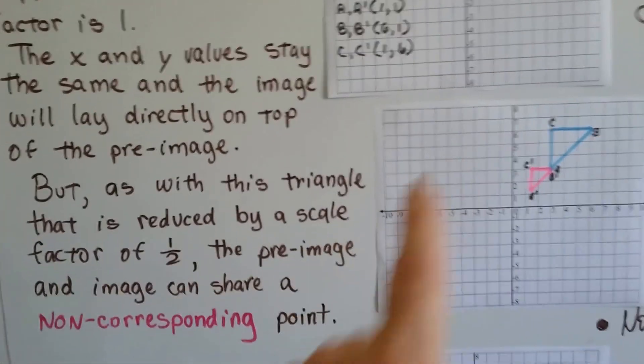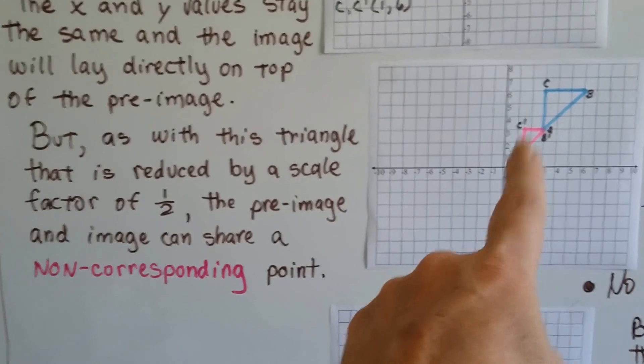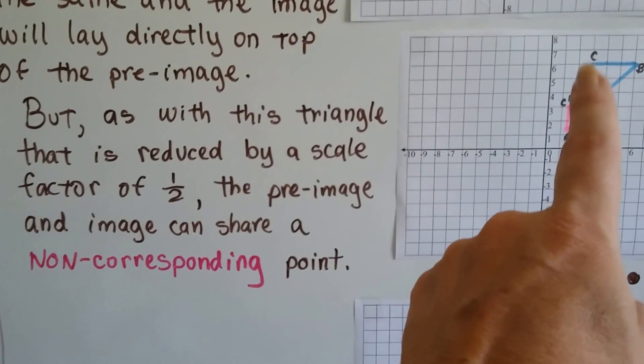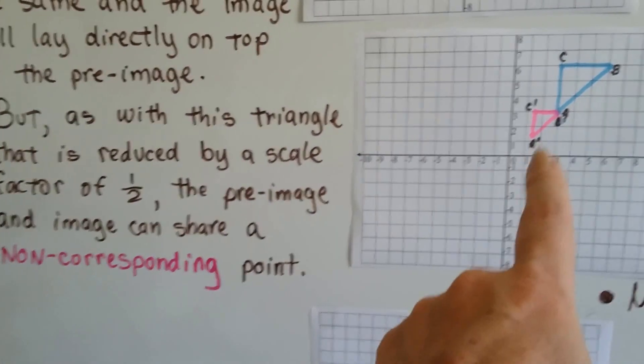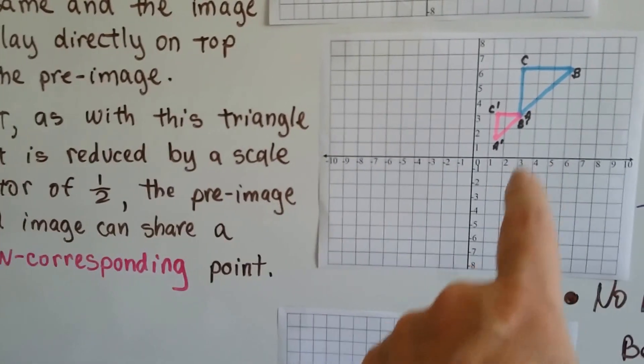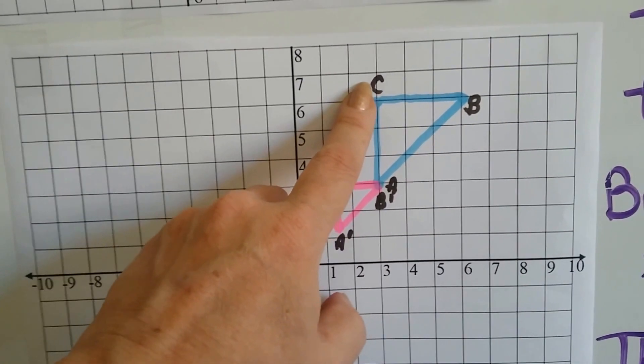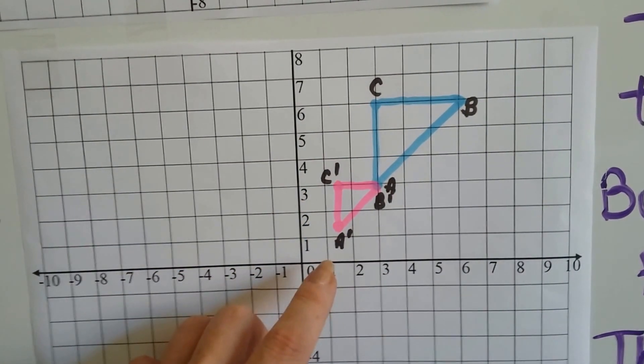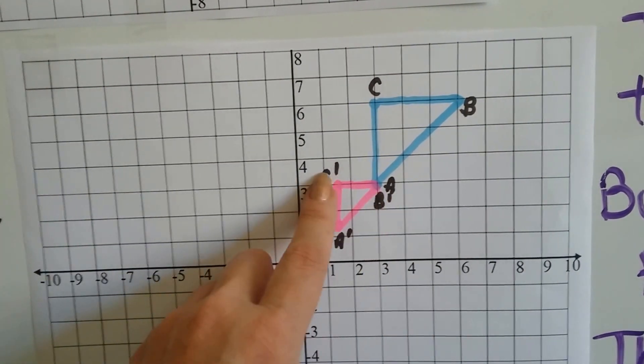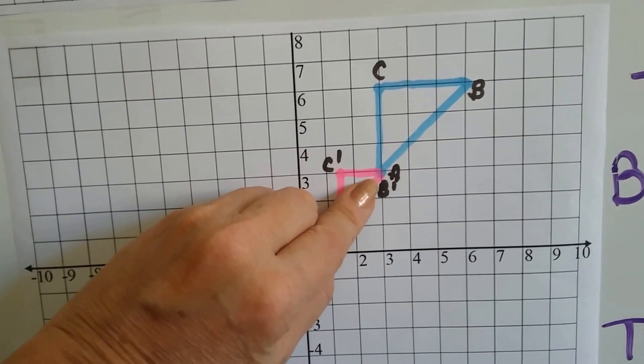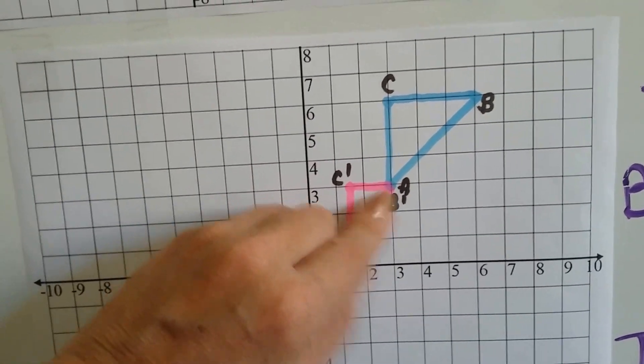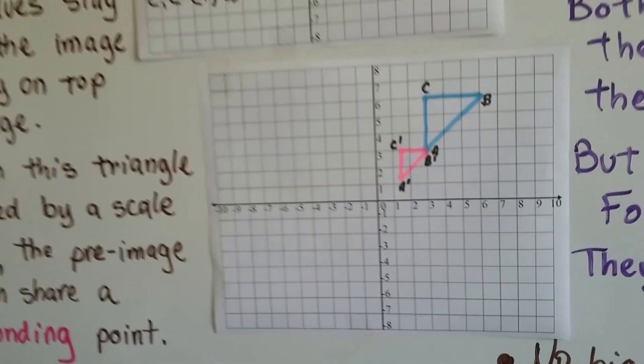But with this triangle reduced by a scale factor of a half, the pre-image and the image can share a non-corresponding point. This triangle ABC, the blue one, is the pre-image and the image is A'B'C'. Look, A and B prime are sharing a point. Well that happens.